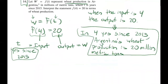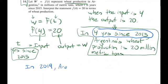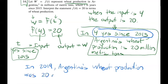If you want to clean this up into a final form, we could say: in 2019, which is four years since 2015, Argentina's wheat production was 20 million metric tons.